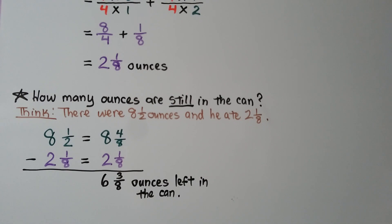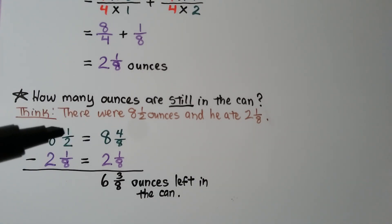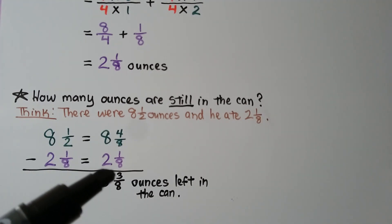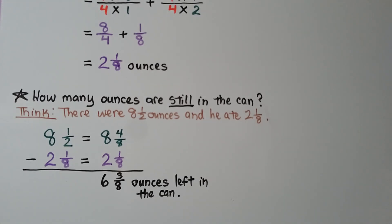How many ounces are still in the can? There were 8 and a half ounces and Bob ate 2 and 1 eighth. We subtract 8 and a half minus 2 and 1 eighth, giving them a common denominator of 8. 8 and a half becomes 8 and 4 eighths. Subtracting the numerators: 4 minus 1 is 3. Subtracting the whole numbers: 8 minus 2 is 6. There are 6 and 3 eighths ounces left in the can.